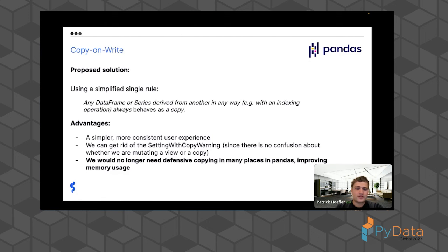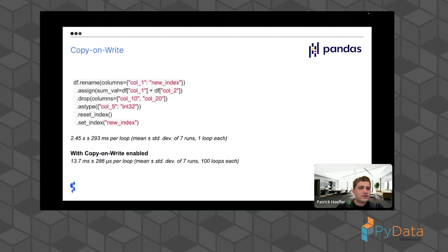The third benefit is probably the most important for users: pandas utilizes defensive copying very heavily across the API, and all of this will no longer be necessary because there's no view anymore that could be modified. We did a benchmark — methods like rename, assign, drop, astype, reset_index, and set_index all perform a defensive copy at the moment. Without copy-on-write the runtime is 2.5 seconds on a 3 million row dataframe; with copy-on-write we get that down to 13.7 milliseconds — roughly a factor of 200 improvement.